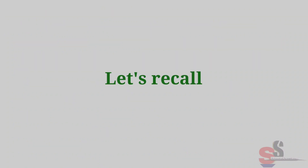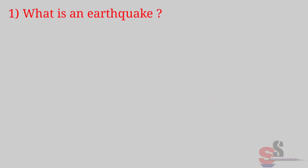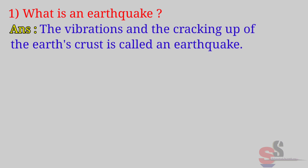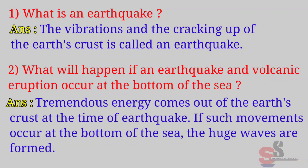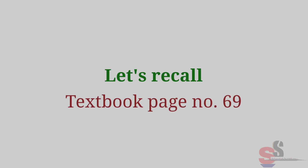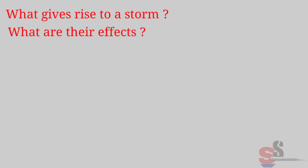Let's recall — Textbook page 68: First — What is an earthquake? Answer: The vibrations and cracking up of the earth's crust is called an earthquake. Second — What will happen if an earthquake and volcanic eruption occur at the bottom of the sea? Answer: Tremendous energy comes out of the earth's crust at the time of an earthquake. If such movements occur at the bottom of the sea, huge waves are formed.